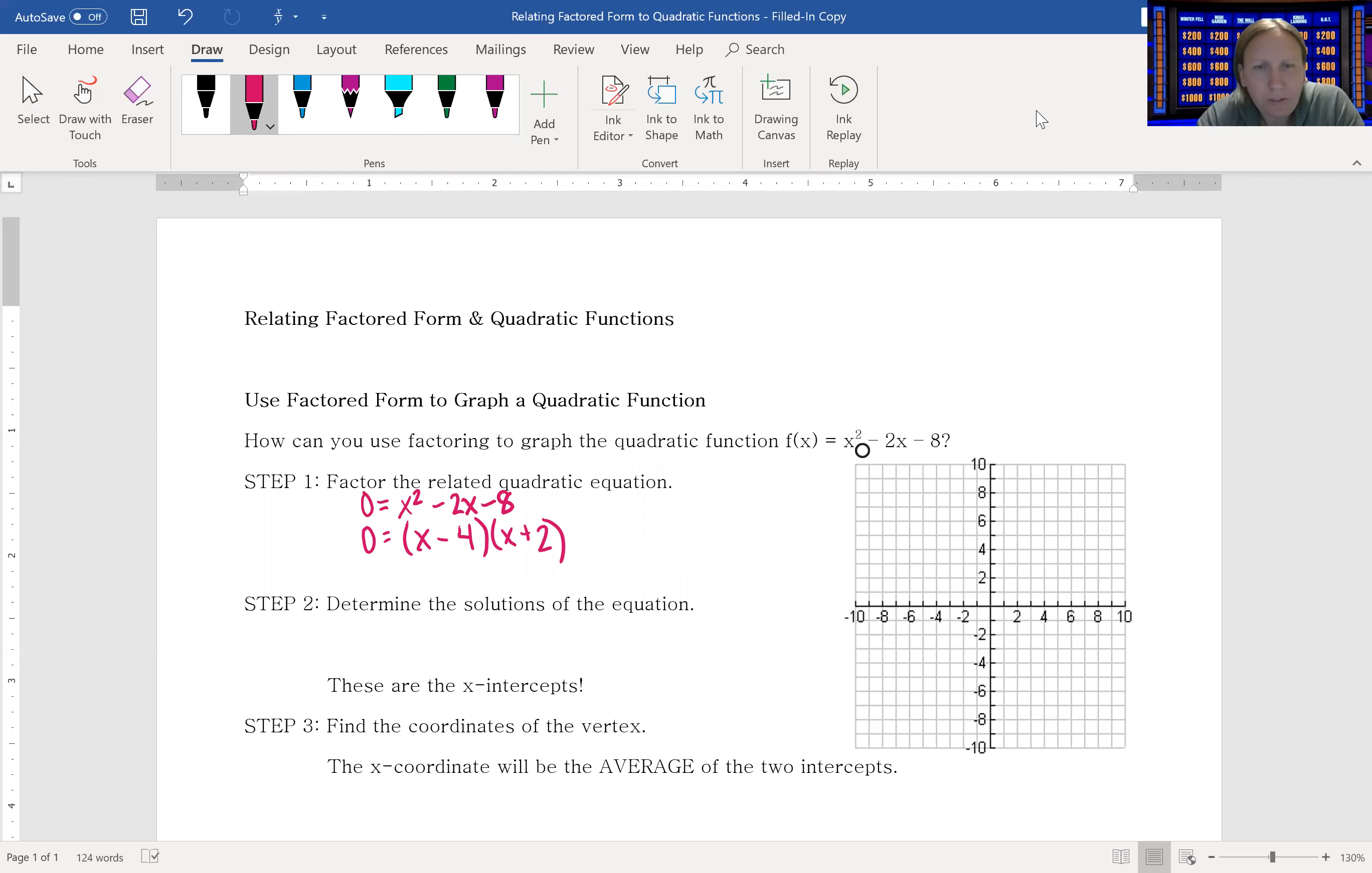From there, using the zero product property, we can determine the solutions of the equation. So x is 4 and x is -2. Now we also know that the solutions of the equation are the x-intercepts of that related function. So I can plug 4 and -2 as the x-intercepts.